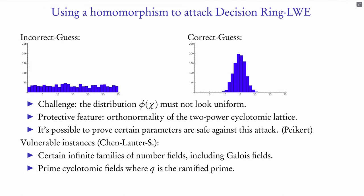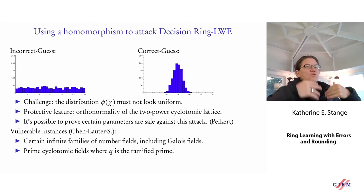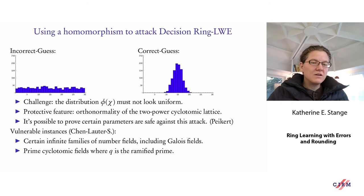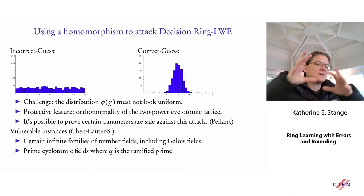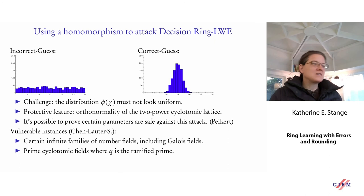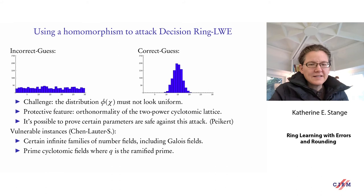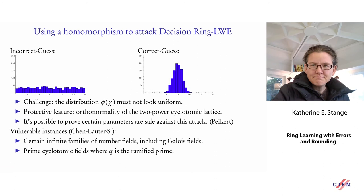In the two-power cyclotomic case — the one mostly proposed for applications — this attack doesn't work: the shape of the lattice means these homomorphisms obliterate the error distribution, making it look uniform in the smaller ring. However, ranging through various number fields, there are infinite families, even Galois fields, that are vulnerable to this attack, proving that certain parts of the parameter space really aren't safe. Interestingly, ramified primes in prime cyclotomic fields seem to be a problem.